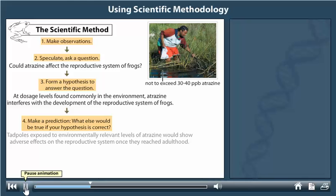He predicted that tadpoles exposed to environmentally relevant levels of atrazine would show adverse effects on the reproductive system once they reached adulthood. In the scientific method, a prediction is tested by a well-designed experiment.